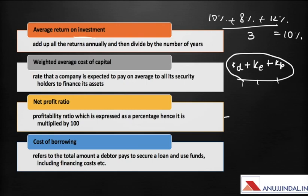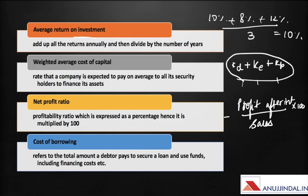Then we have the net profit ratio, which is a profitability ratio expressed as a percentage. It is calculated as profit after interest divided by sales revenue, multiplied by 100.